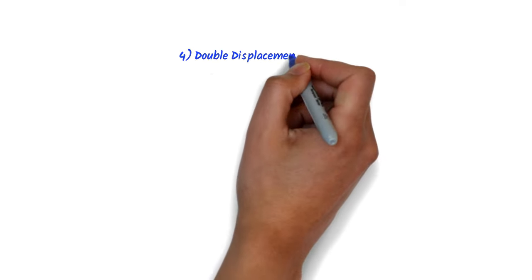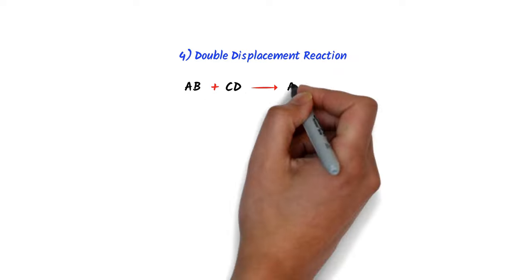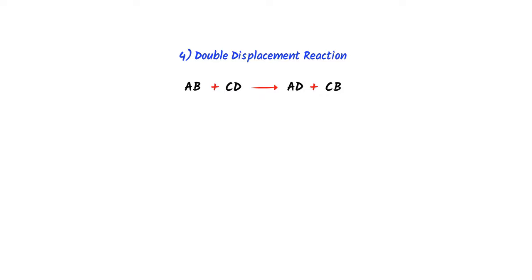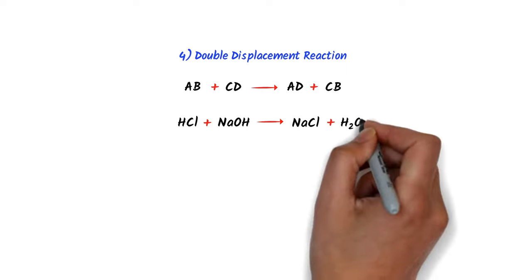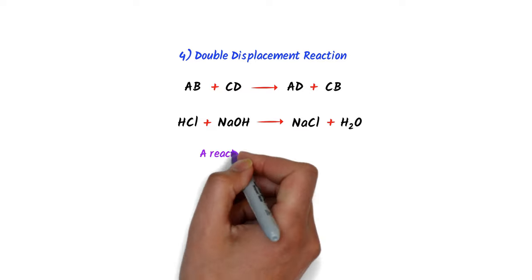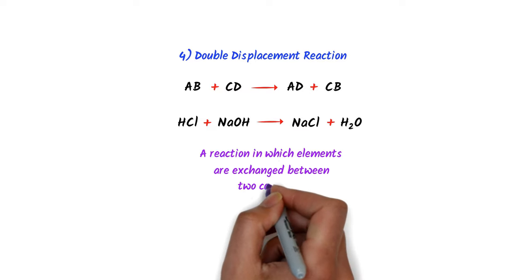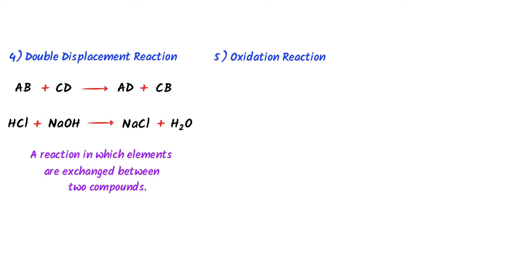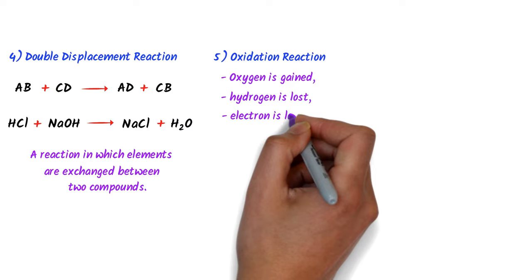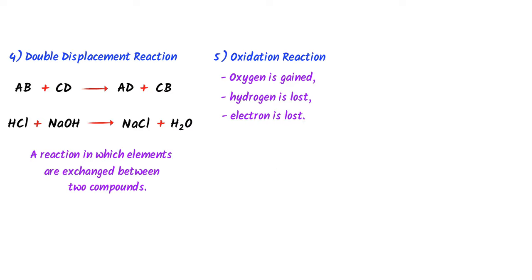The fourth type is double displacement reaction — AB plus CD react to form AD plus CB. For example, HCl plus sodium hydroxide react to form sodium chloride plus water. We define it as: a reaction in which two elements are exchanged between two compounds.